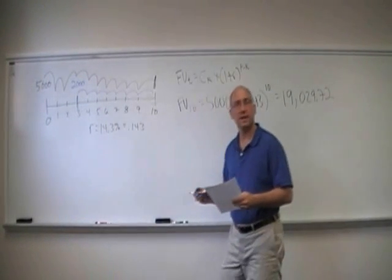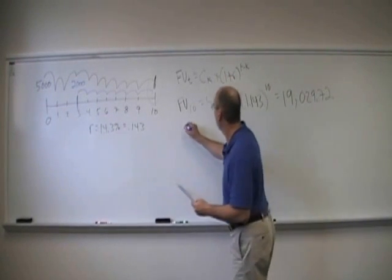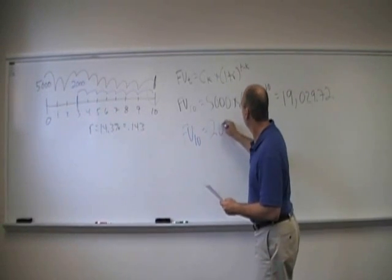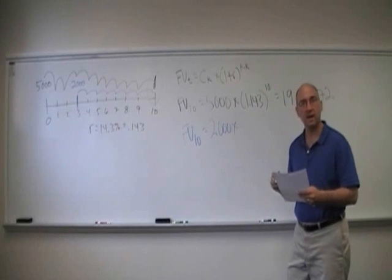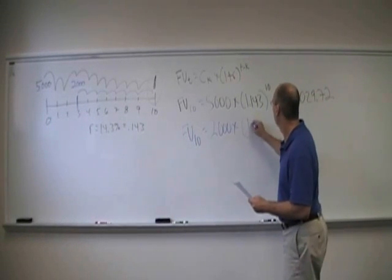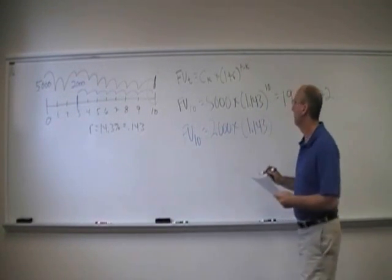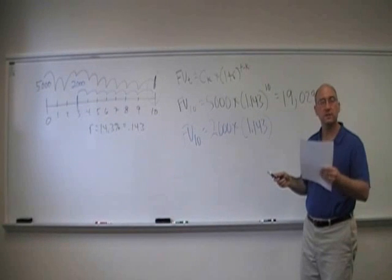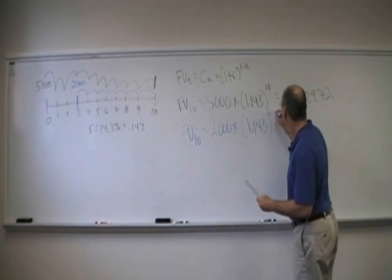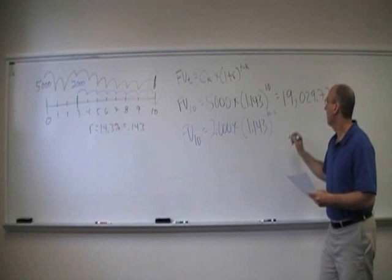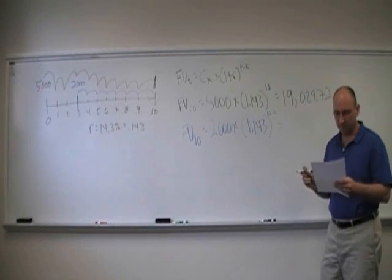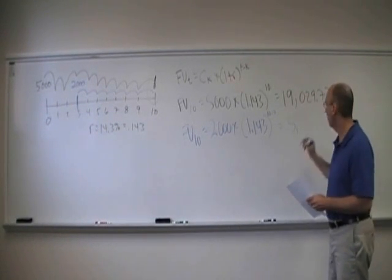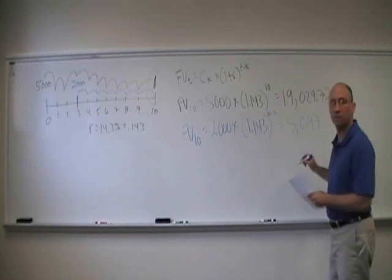How about the $2,000 that got invested in 3 years? Well, its future value in 10 years is equal to the $2,000 that got invested. We want to know how much we'll have in 10 years, but we invested it in 3 years. There's 10 minus 3, which is 1.143 to the 7th, and that is equal to $5,097.46.